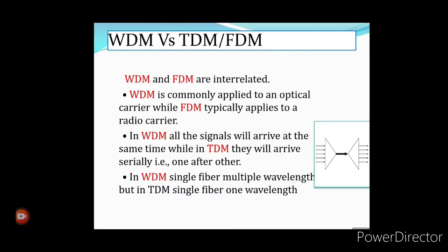WDM and FDM are very much interrelated, but WDM is formally applied to optical carriers while FDM is applied to radio carriers. In WDM, all signals arrive at the same time, while in TDM signals arrive serially, one after the other. In WDM, a single fiber gives multiple wavelengths, while in TDM a single fiber yields one wavelength.